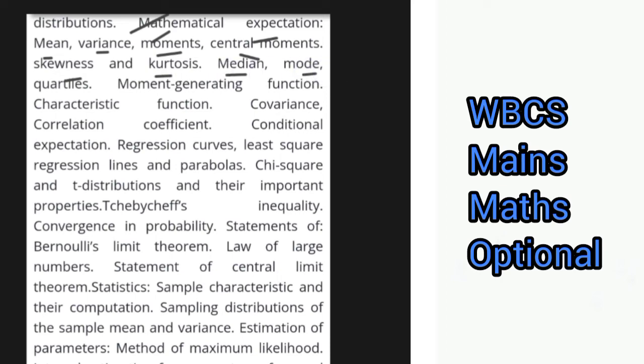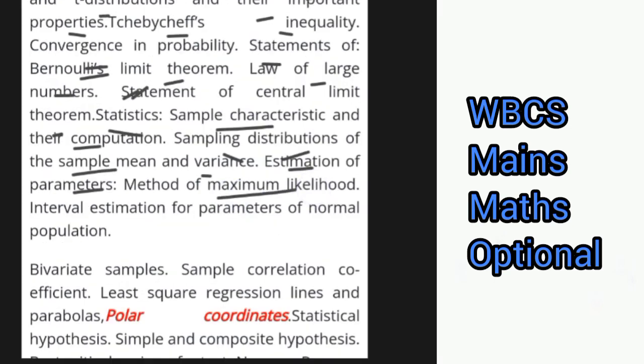The next portion deals with Mathematical Expectation including mean, variance, moments, central moments, skewness and kurtosis, median, mode, quartiles, moment generating function, characteristic function, covariance, correlation coefficient, conditional expectation, regression curves, least square regression lines and parabolas, chi-square and t distributions and their important properties, Chebyshev's inequality, convergence in probability, statements of Bernoulli's limit theorem, law of large numbers, and statement of central limit theorem. Under Statistics you have sample characteristics and their computation, sampling distributions of the sample mean and variance, and estimation of parameters including method of maximum likelihood and interval estimation for parameters of normal population.